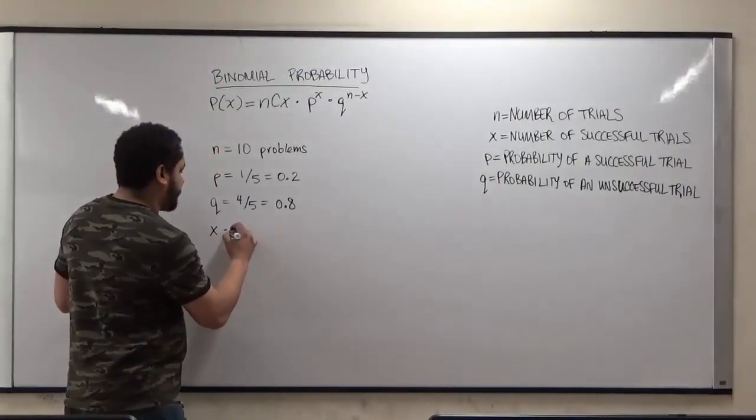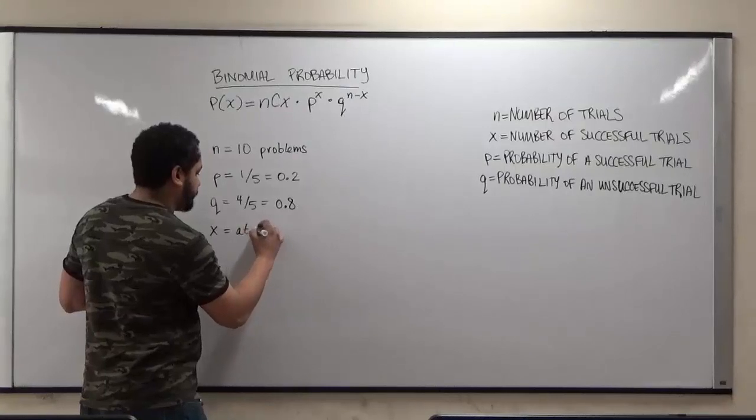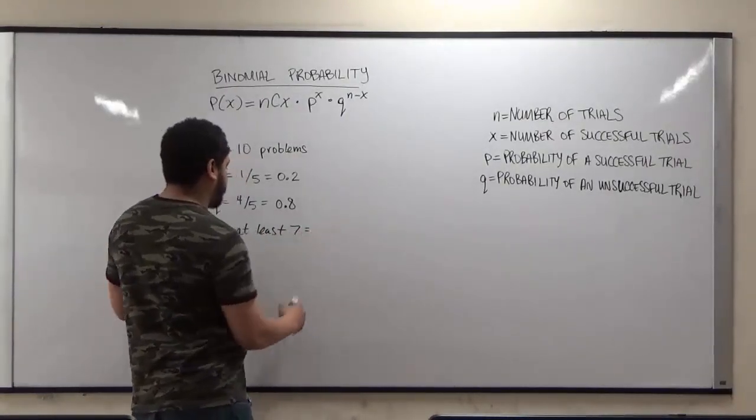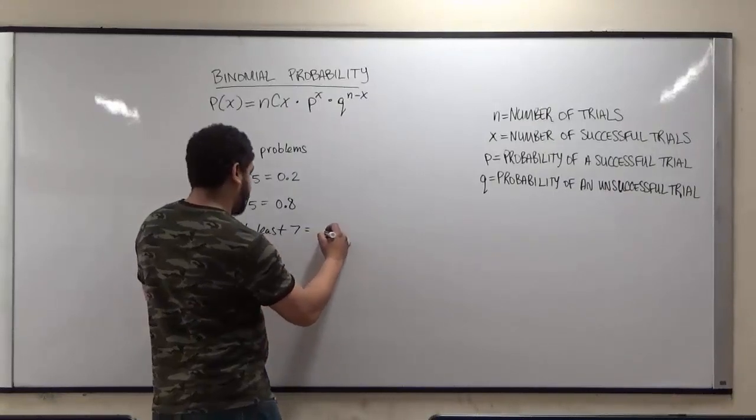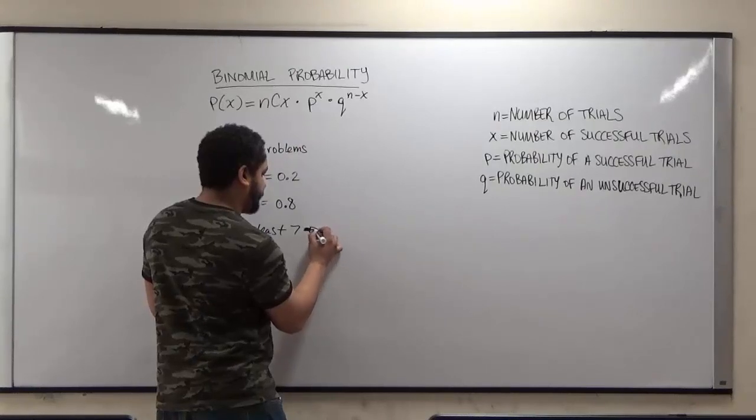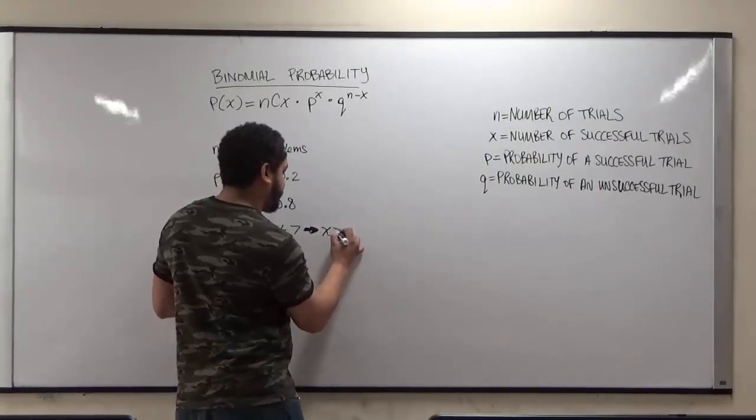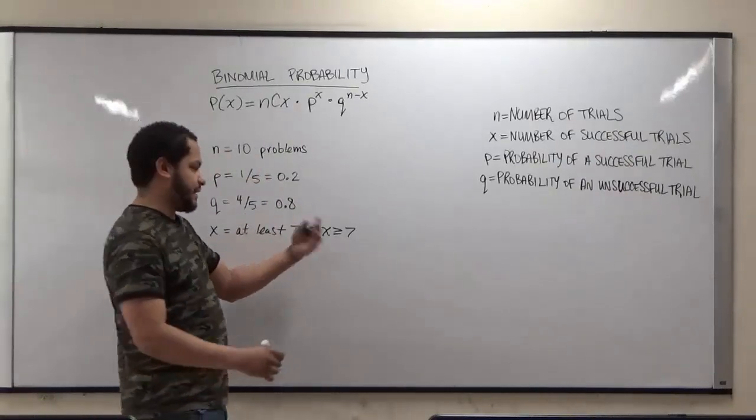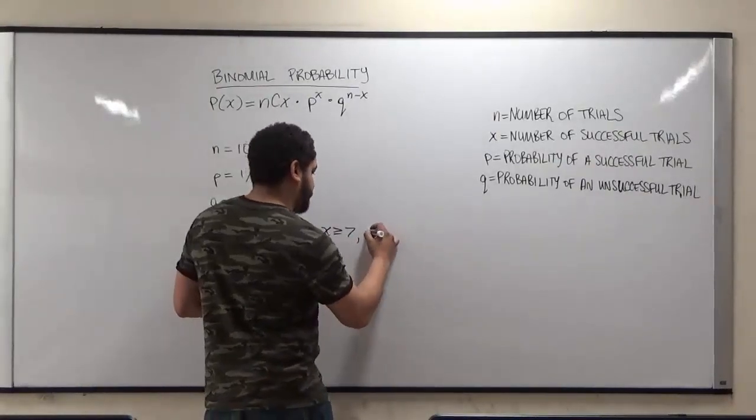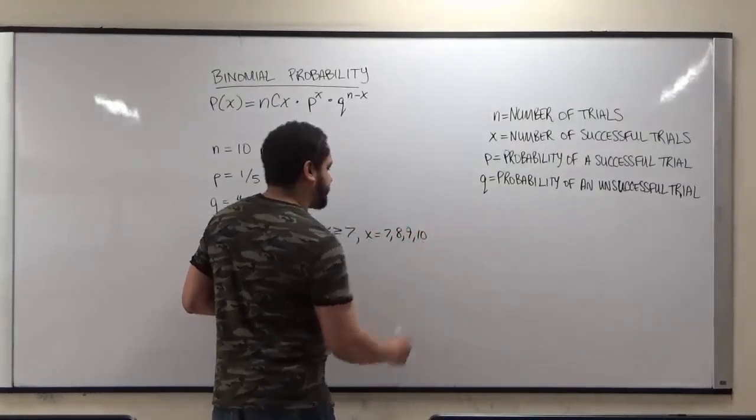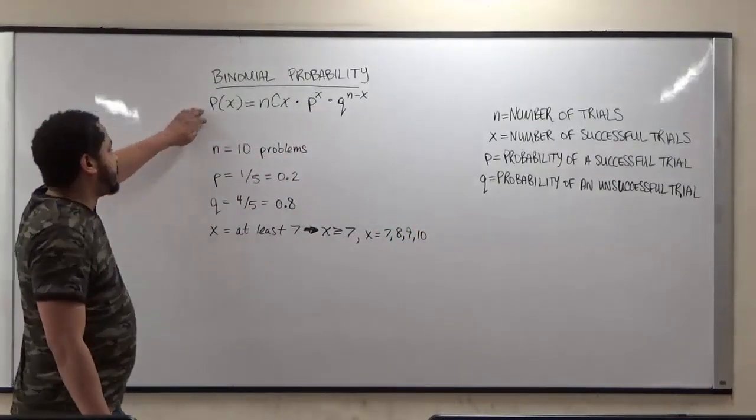the x will be at least 7. And this translates into x being, so we'll put a little arrow here to define this, and we'll say x must be greater or equal to 7, because it says at least. This includes 7, 8, 9, and 10. So this would be x equals 7, 8, 9, and 10. Now, when we're using binomial probability,